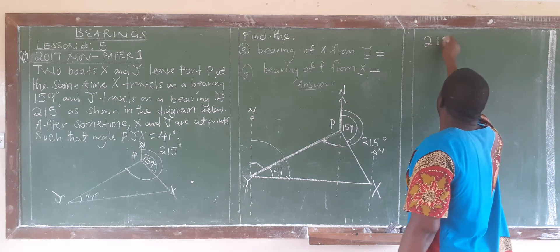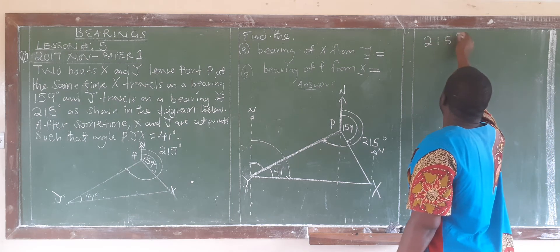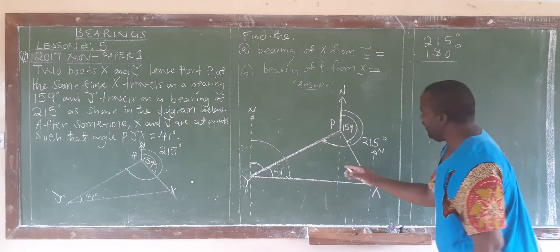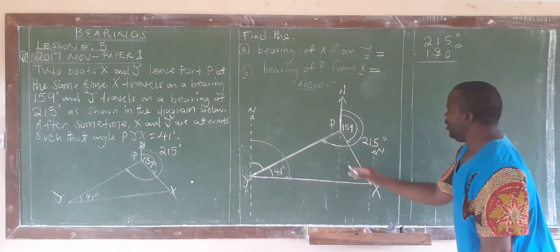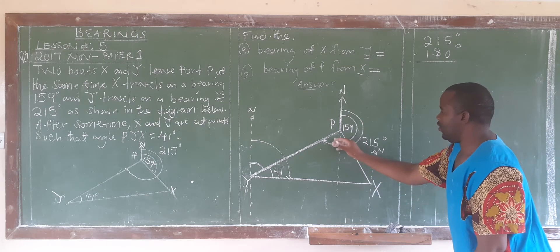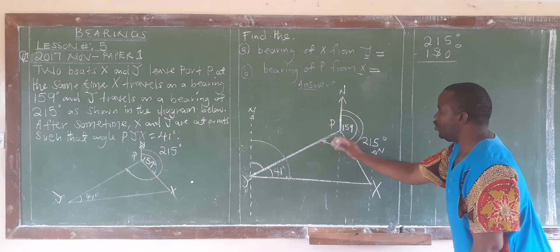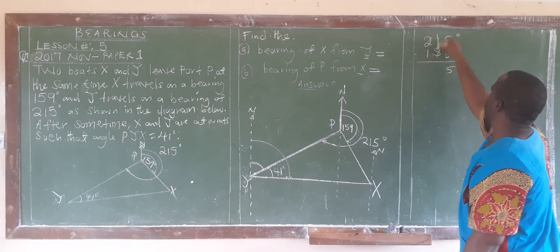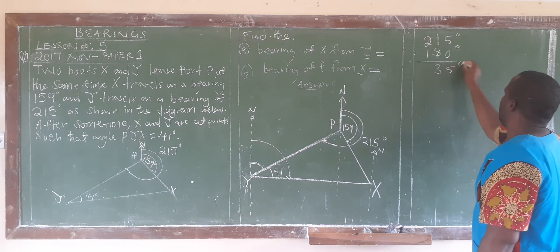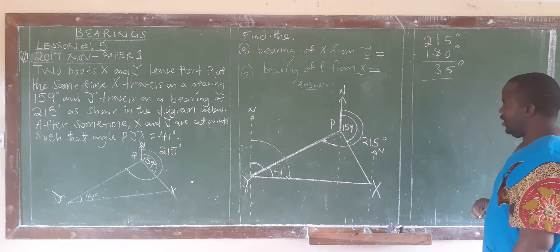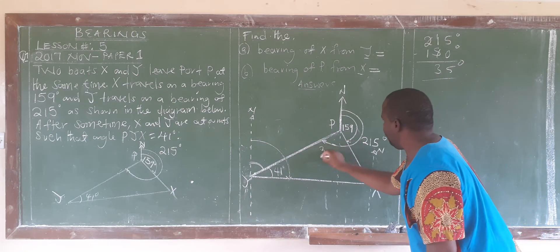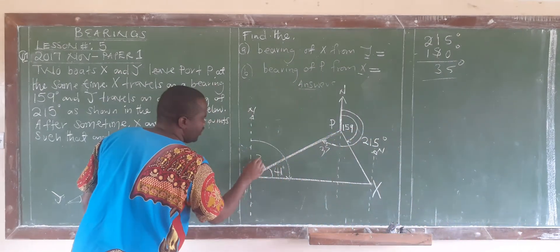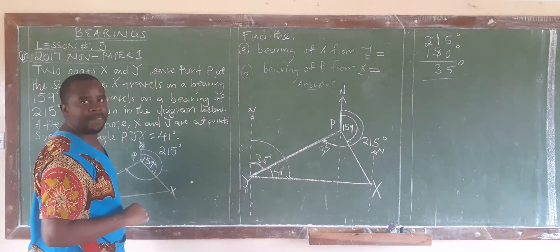And the bearing from here up to there is 215. So we say 215 degrees minus 180 degrees. The difference here will be this angle, which also belongs to that one. When we subtract here, we have 35 degrees. So we have 35 degrees here, meaning that if this is 35, this angle is also 35 degrees.